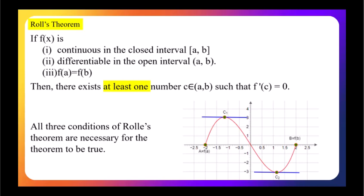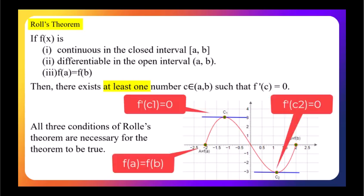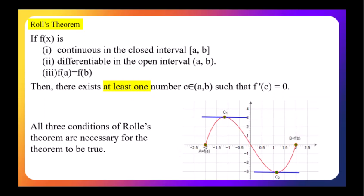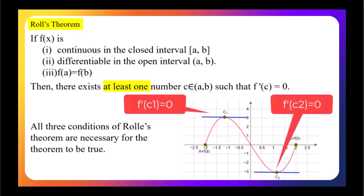In this figure, two such points c are shown, named c1 and c2. The function meets all the criteria for Rolle's theorem: it is continuous on the interval [-2, 2], differentiable on the open interval (-2, 2), and f(-2) equals f(2), both equaling zero. By Rolle's theorem, there exist two points: x equals -1.15 and x equals 1.15, where the tangent line is horizontal — parallel to the x-axis.